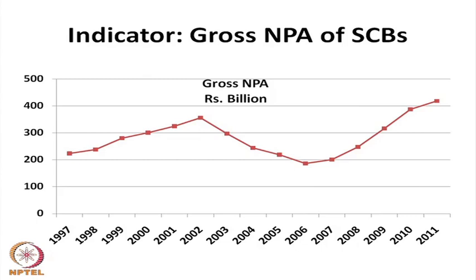Another indicator is the banking sector indicator. When banking sector assets become NPAs, it leads to banking crisis. From 1997 onwards, the gross NPA of the economy was quite high until 2002, after which it declined. But from 2007–08 onwards, as the world financial crisis started, NPAs have been increasing. Gross NPA of the banking sector in India has been increasing from 2007–08, indicating that the Indian economy is also unstable.